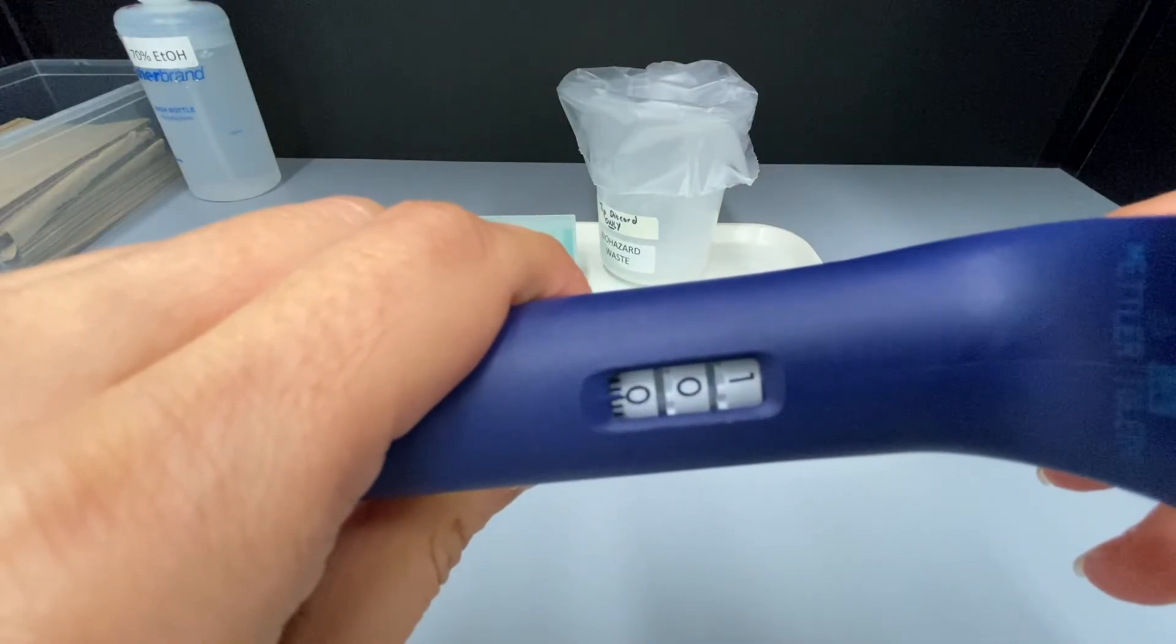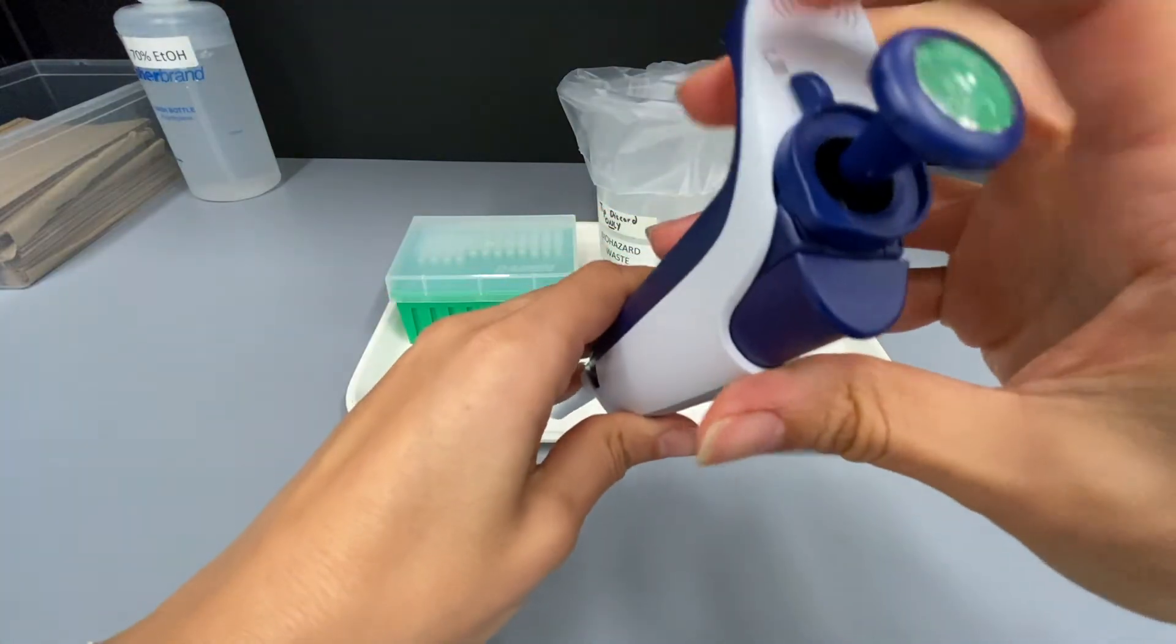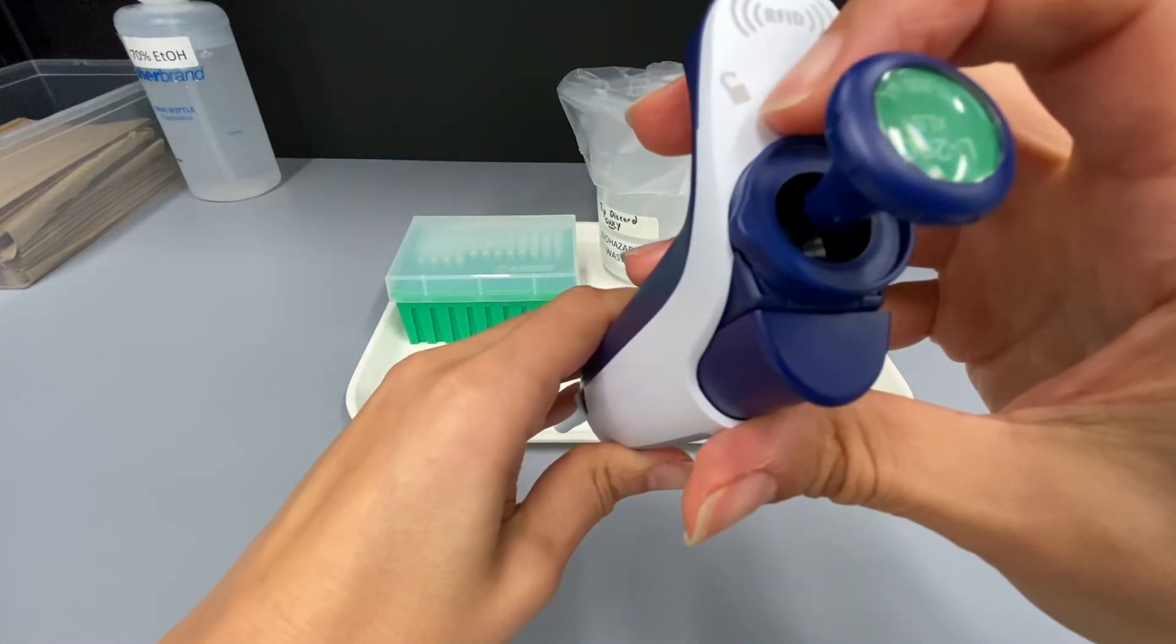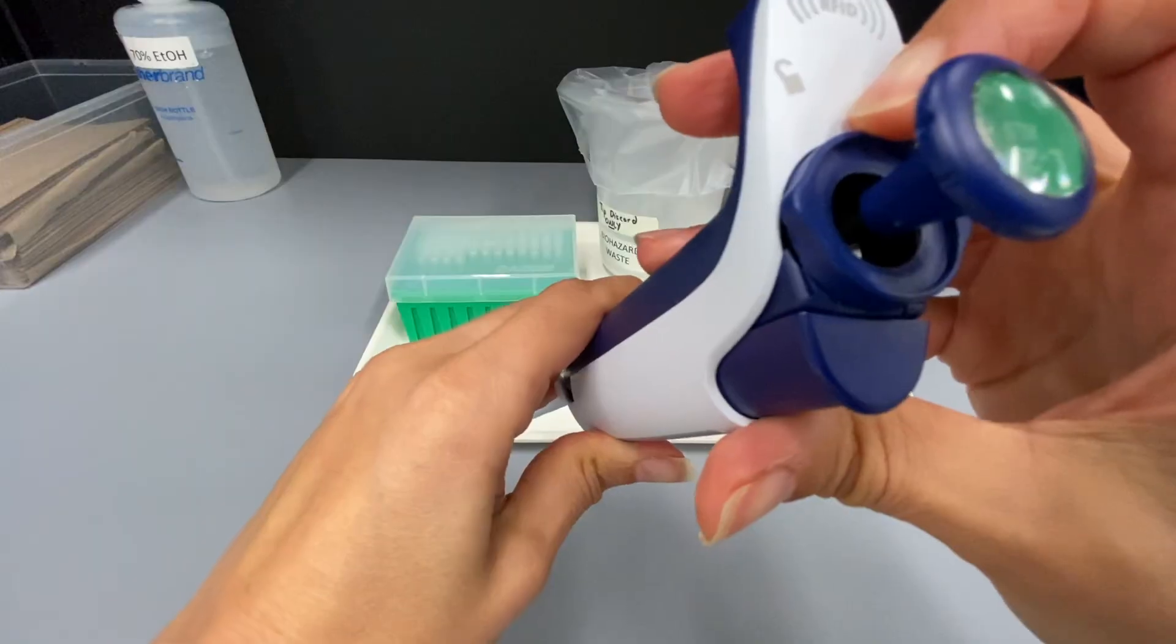Never adjust the pipette above the maximum or below the minimum as this could damage the pipette. Once the pipette is set to 100, lock the pipette if it has a locking mechanism so that the volume is not accidentally changed.